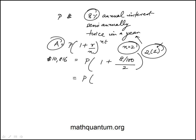So that would be 1 plus 4 over 100, which is 0.04, or you can think of it as 1.04. So this is P times 1.04 squared. So the principal is 10,816 divided by 1.04 squared.